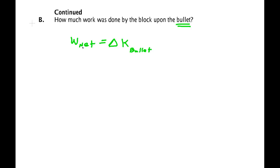So what we're looking at here is one-half times the mass of the bullet times the final speed of the bullet squared, I should say, minus one-half the mass times the initial speed of the bullet squared.